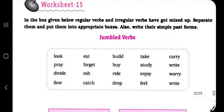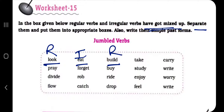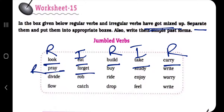Next is worksheet 15. In the box given below, regular verbs and irregular verbs have been mixed up. We have to separate them and put them into appropriate boxes, and also write their simple past form — very easy. By now you have understood how to find out whether a verb is regular or irregular. Look: 'look' is regular, 'eat' is irregular, 'build' is regular, 'take' is irregular, 'carry' is regular, 'pray' is regular, 'forget' is irregular.